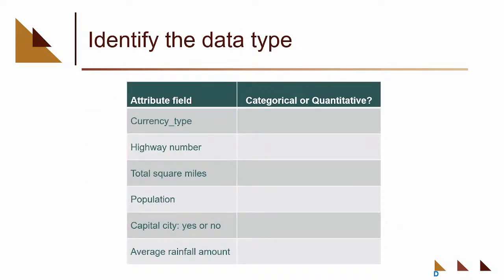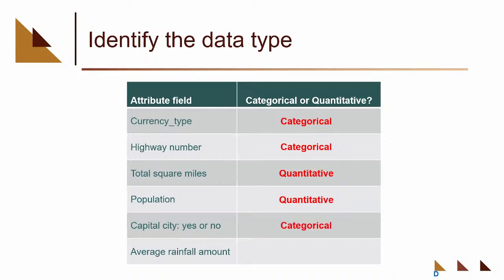Quick examples of types of data: currency type — that's categorical. Highway number — even though it's a number, it's categorical; the number is just telling me the name of the highway, not representing information about it. Total square miles — that's quantitative; how big is this area, 50 hectares. Population — quantitative; how many people live here. Capital city, yes or no — that's categorical. Average rainfall amount — quantitative.